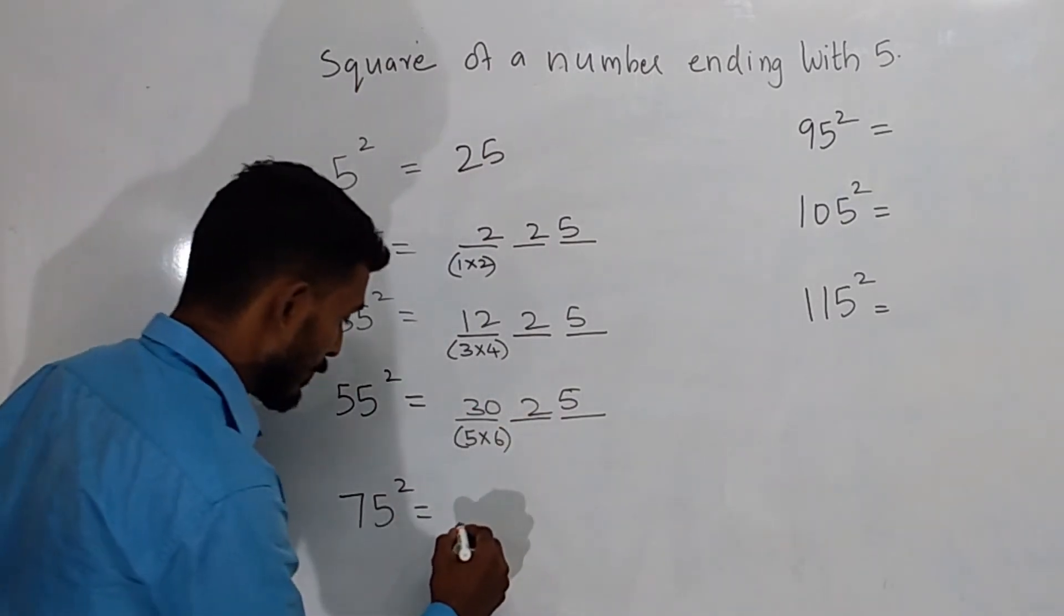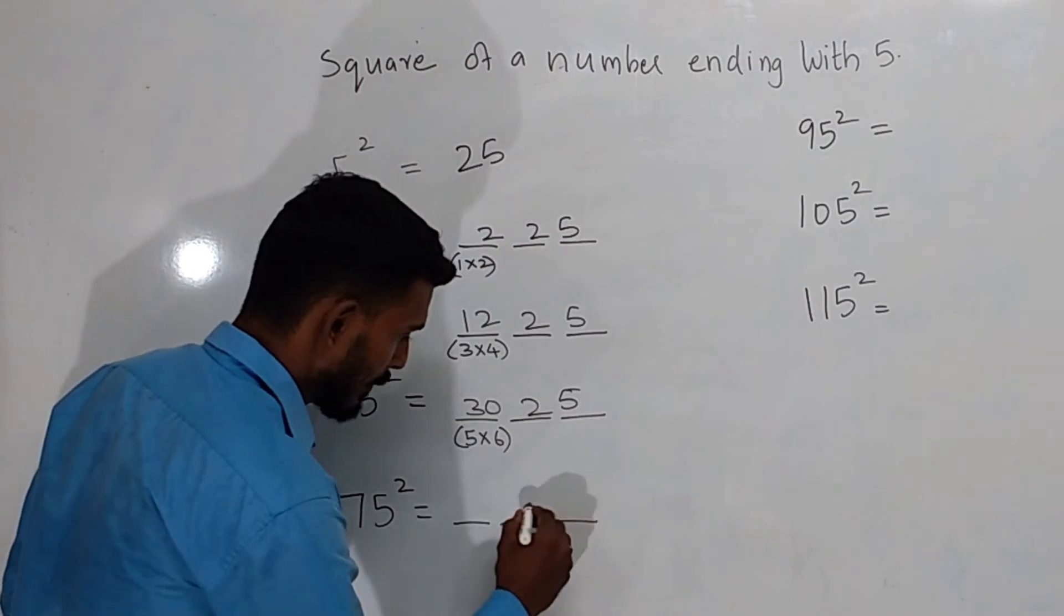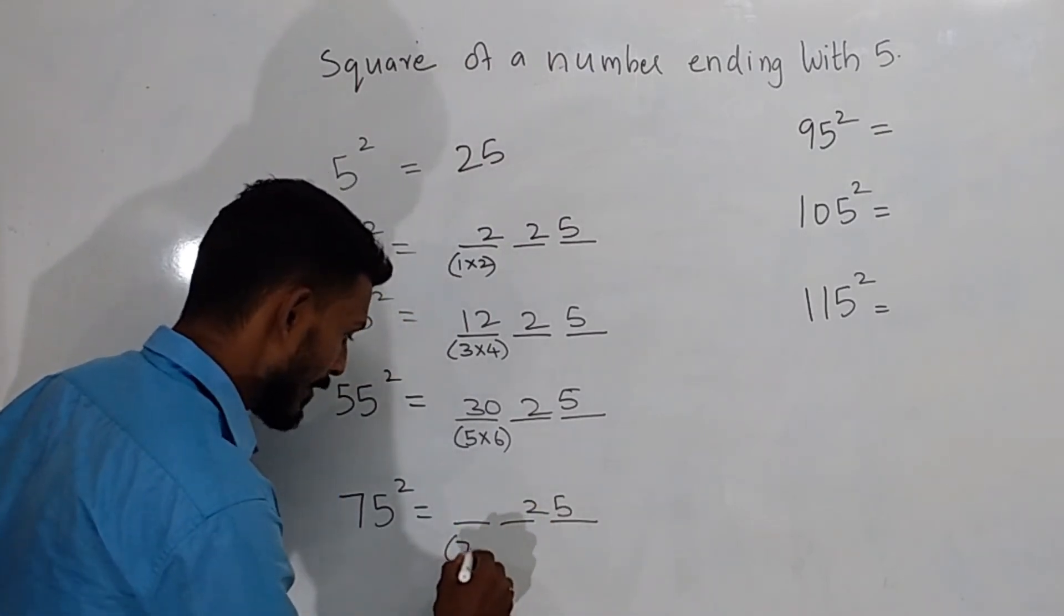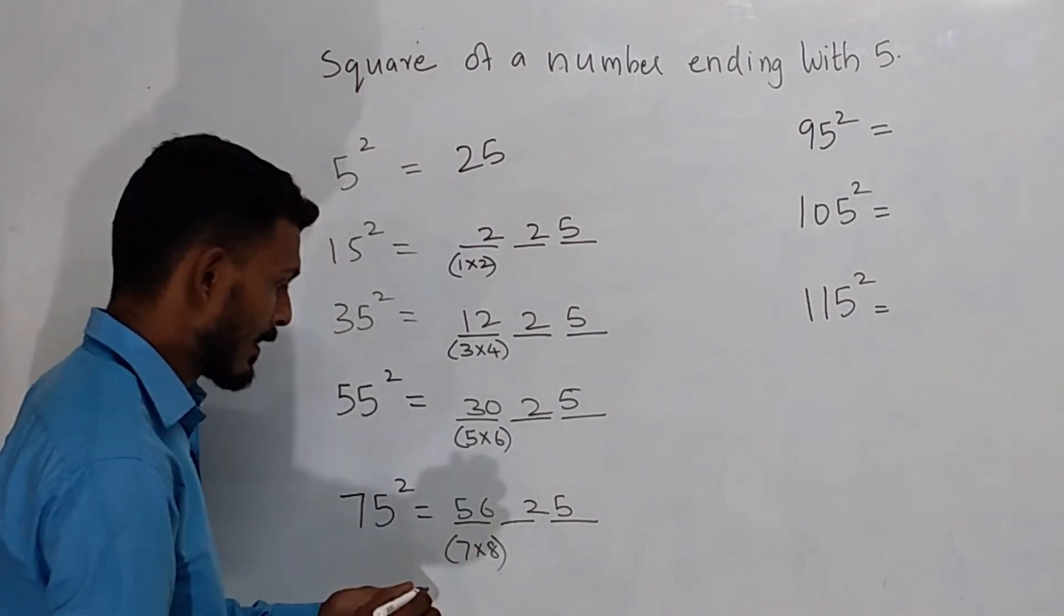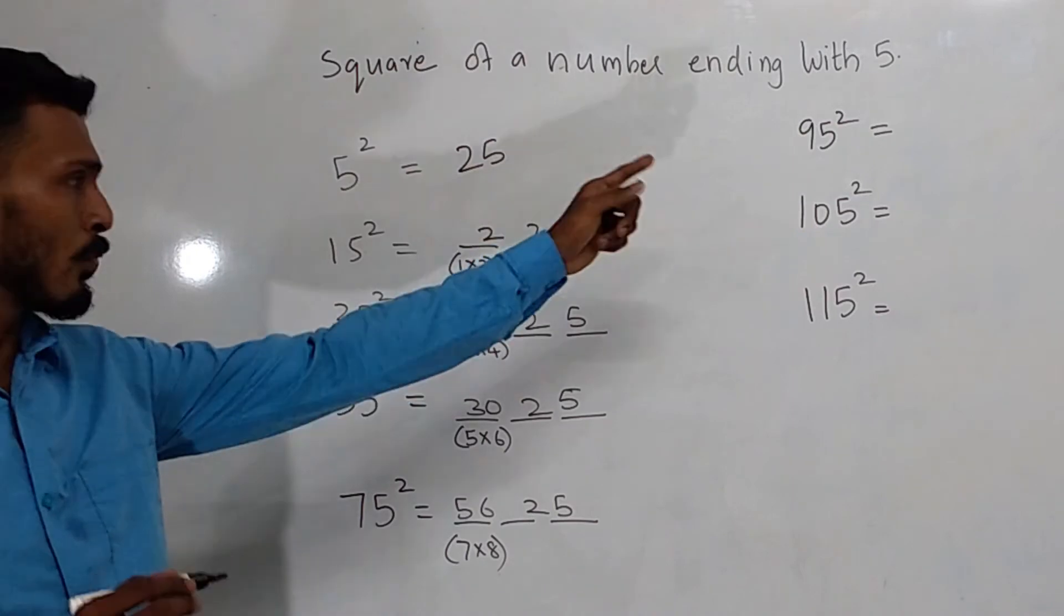Then 75 square, that is, again the same thing, 25 here, 7 into 8, that is 56. Isn't that easy? Then we can move further.